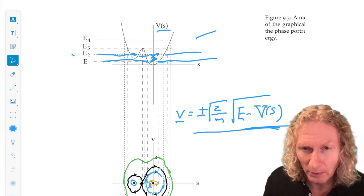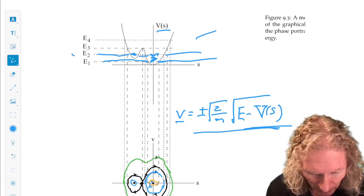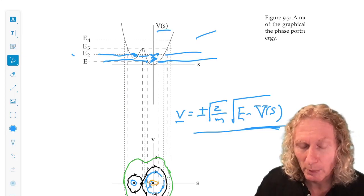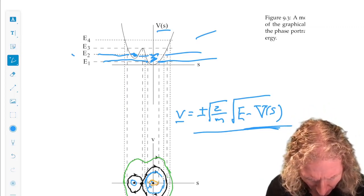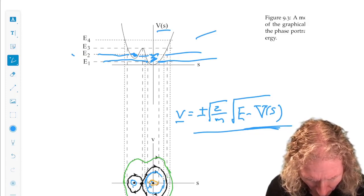See that that is translated into V, into the left-hand potential well. So that's the periodic orbit over on the left side.